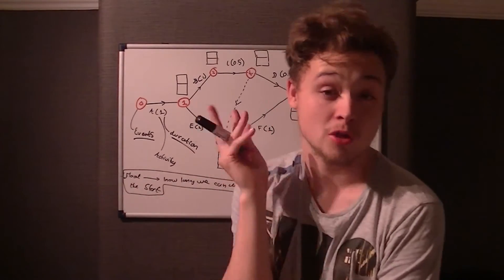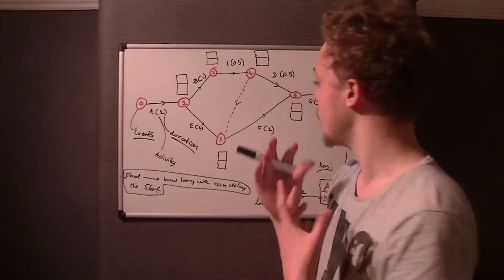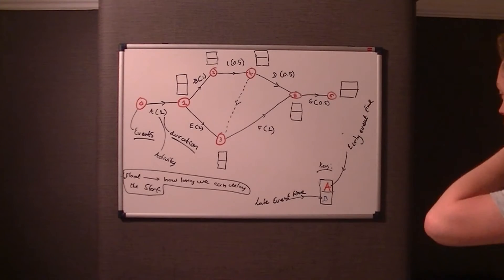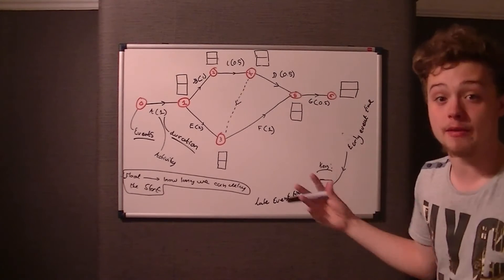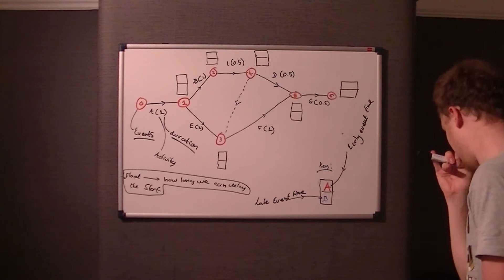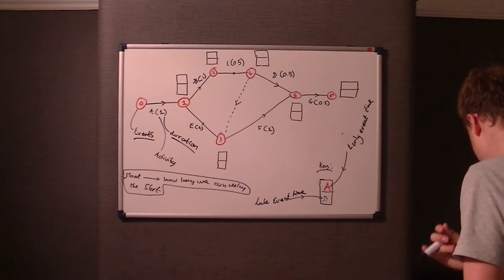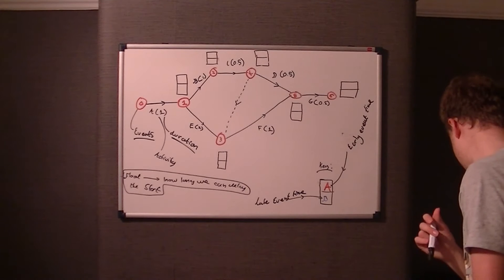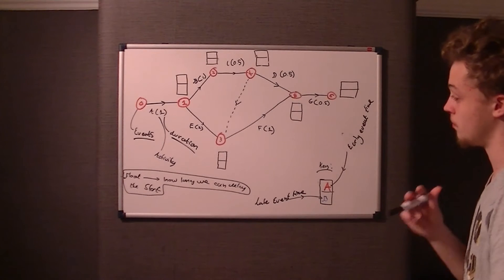They will always draw the graph in D1 — you will never have to redraw the graph in the exam. The Early Event Time is the earliest time you can arrive at the event with all incoming activities completed. The Late Event Time is the latest time you can leave the event without extending the length of the critical path.